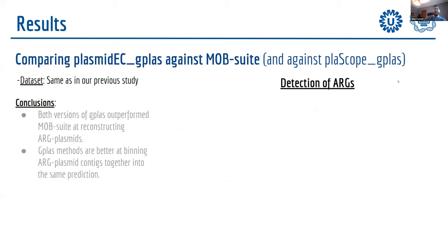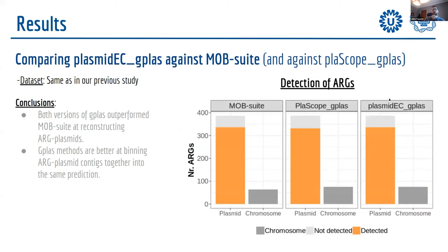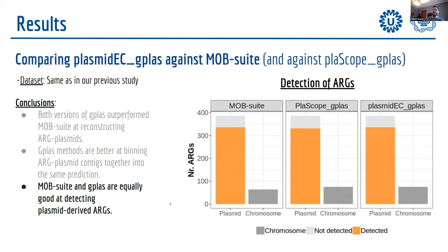We also evaluated ARG detection: on the y-axis is the number of antibiotic resistance genes detected, shown in orange; not detected in light gray; chromosomal genes in dark gray. The GPlas method detected the same amount of antibiotic resistance genes as MOB-suite. The only difference was that the GPlas methods included slightly more chromosomal contamination in the predictions.